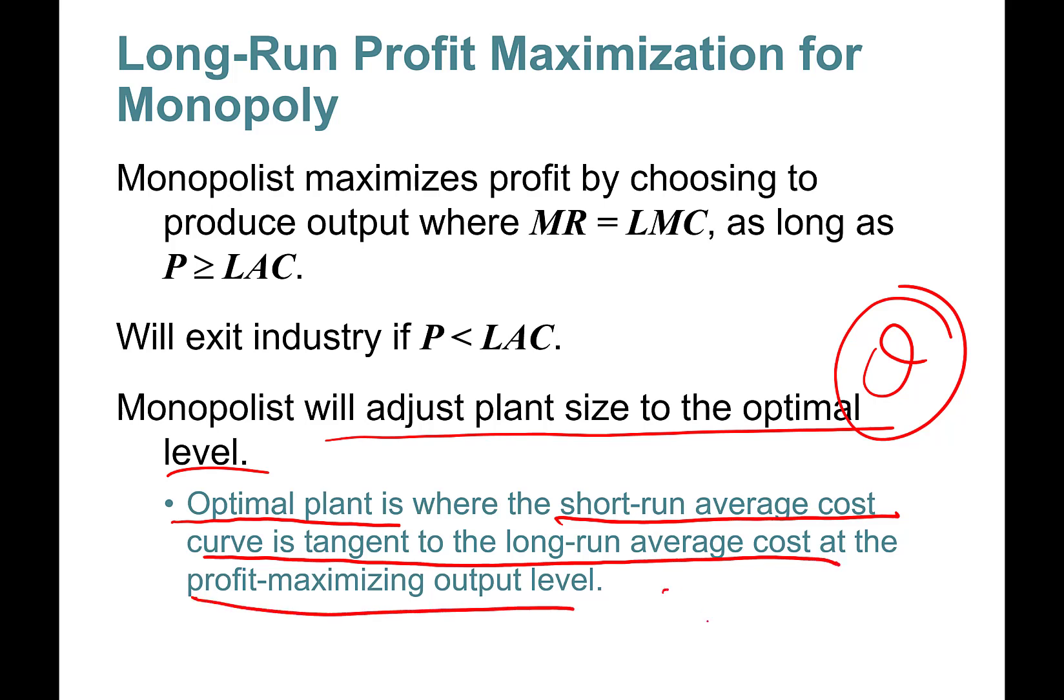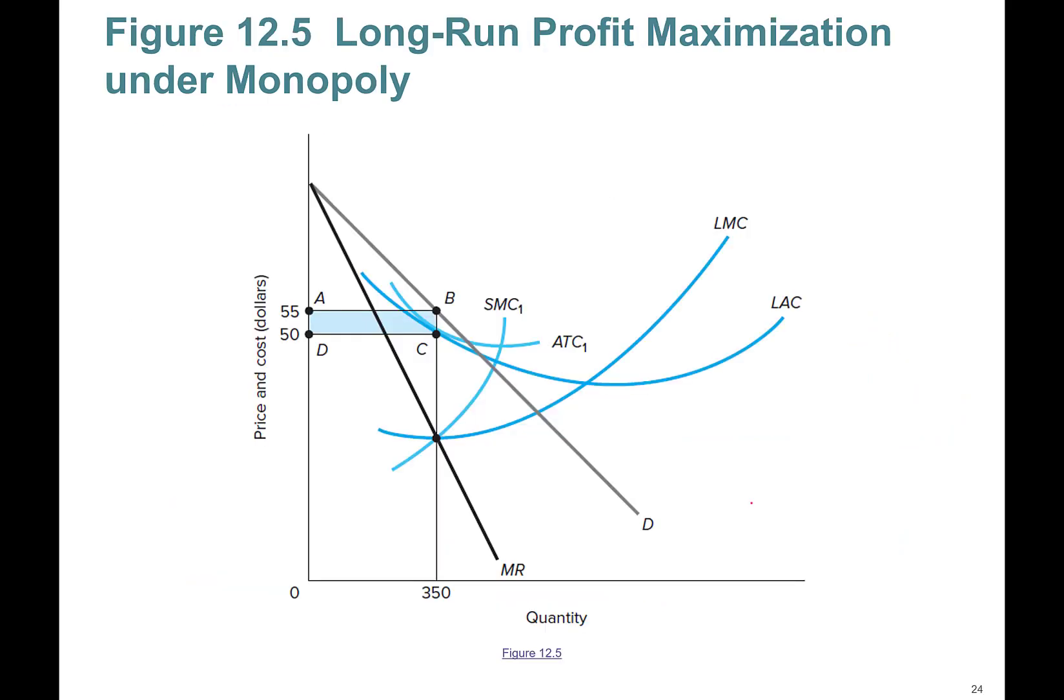I can't visualize this so I'm going to show you graphically, very easy. So long-run profit maximization: long-run marginal cost curve, right, equalize it, find intersection point with marginal revenue curve. Okay, so this is the quantity.